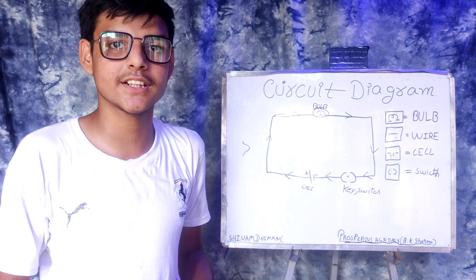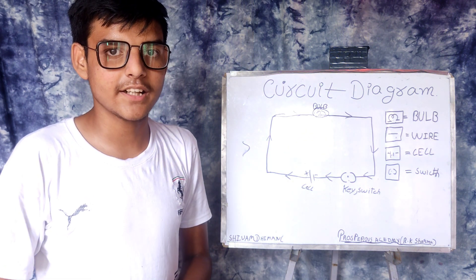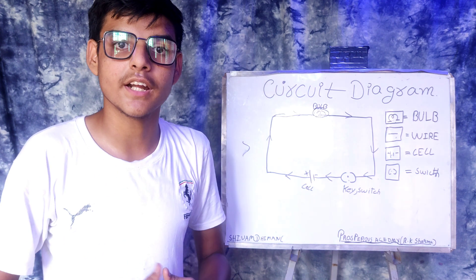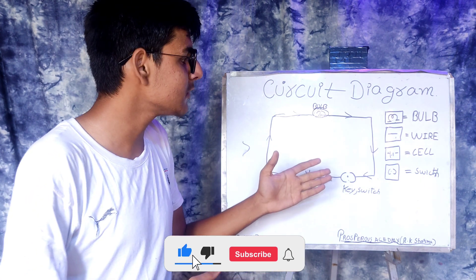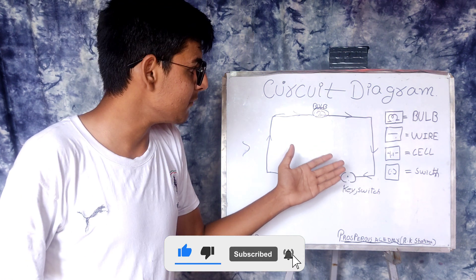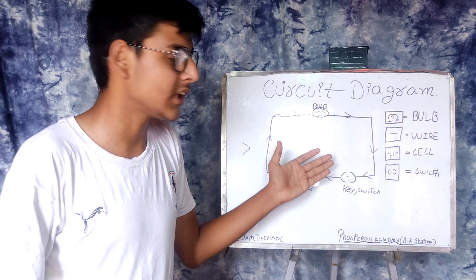Now, we have various other circuit diagram elements like voltmeter, ammeter, resistance, variable resistance, etc. But these are the most common elements which are used in a circuit diagram.